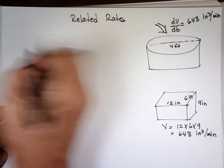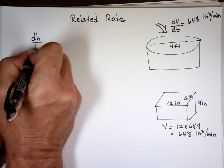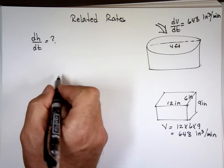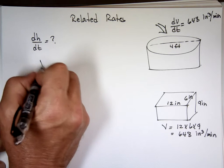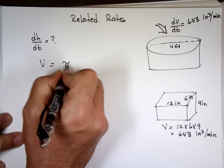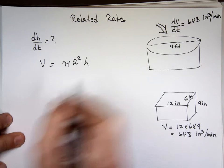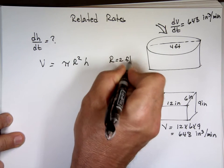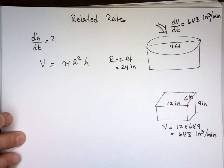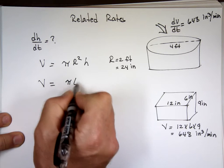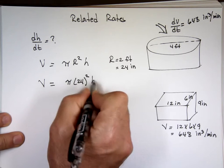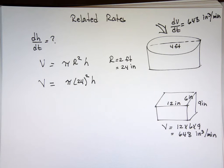The question, how fast the height is changing? What is dh dt equal to? The volume for that shape, we said it's what? Pi r squared times h. R equals 2 feet, which is how many inches? 24 inches. So the equation for this pool is pi times 24 squared times h. 24 squared, 576.